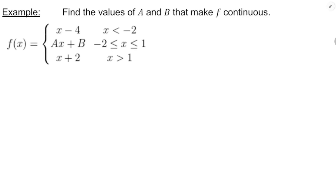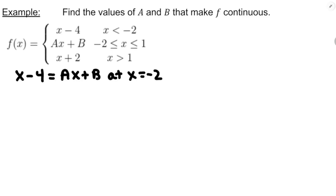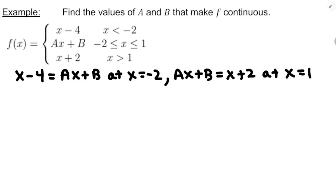Now let's bump it up a level — a piecewise function with three pieces, finding the values of a and b that make f continuous. We do the same thing: set the pieces equal to each other at the x values they share. x minus 4 and ax plus b share x equals negative 2, and ax plus b and x plus 2 share x equals 1. So x minus 4 equals ax plus b at x equals negative 2, and ax plus b equals x plus 2 at x equals 1.